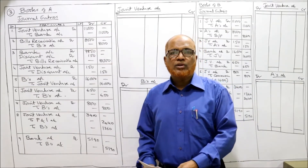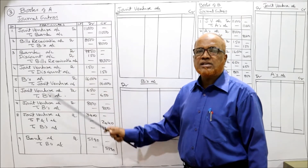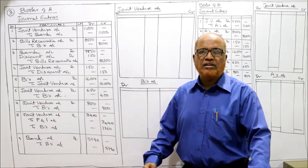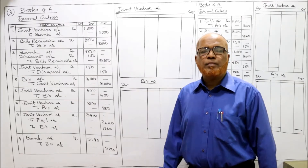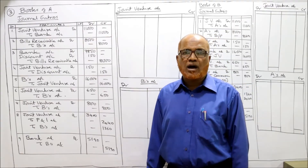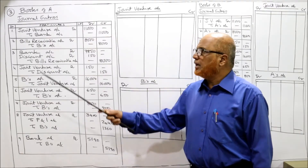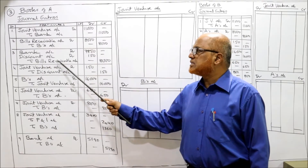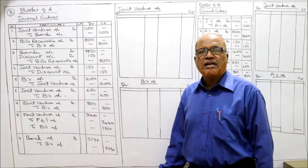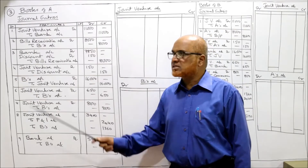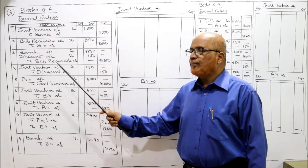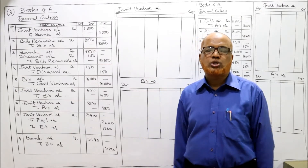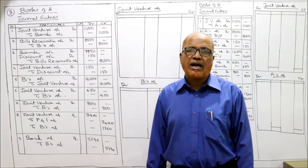This 8,000 rupees bill was discounted with the bank. The entry will be: Bank Account Dr. 7,850, Discount Account Dr. 150, to Bills Receivable 8,000 - being the bill discounted with bank. The discount account is debited 150 rupees. This discount should be closed by transferring it to Joint Venture Account.